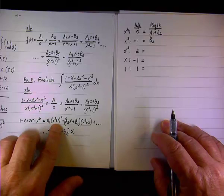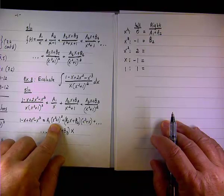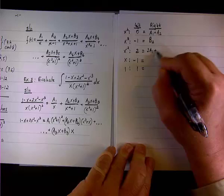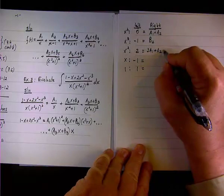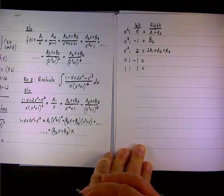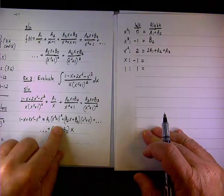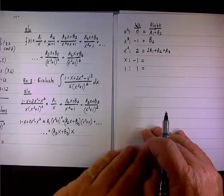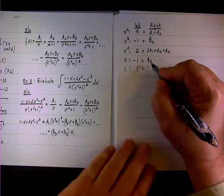For the coefficient of x: from the first term a1·(x⁴ + 2x² + 1), there's no x term. From the second term, b2·x is the only x contribution. From the third term, b3·x also contributes. So the equation is b2 + b3 = −1. For the constant term: a1·1 is the only constant, so a1 = 1.